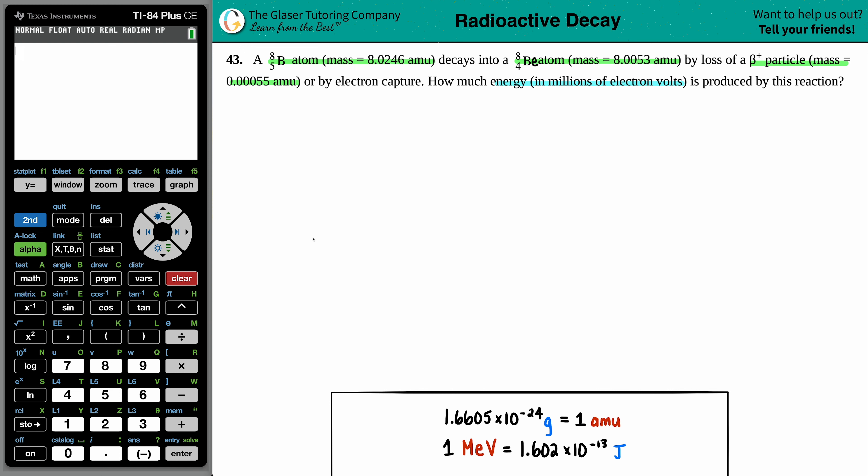Now, since we've got that figured out, let's write the balanced equation. We have boron-8 with atomic number 5. They give us the mass as 8.0246 AMUs for this guy. And it's going to decay into BE-8, 4 on the bottom. They tell us the mass of that, so 8.0053 AMUs.